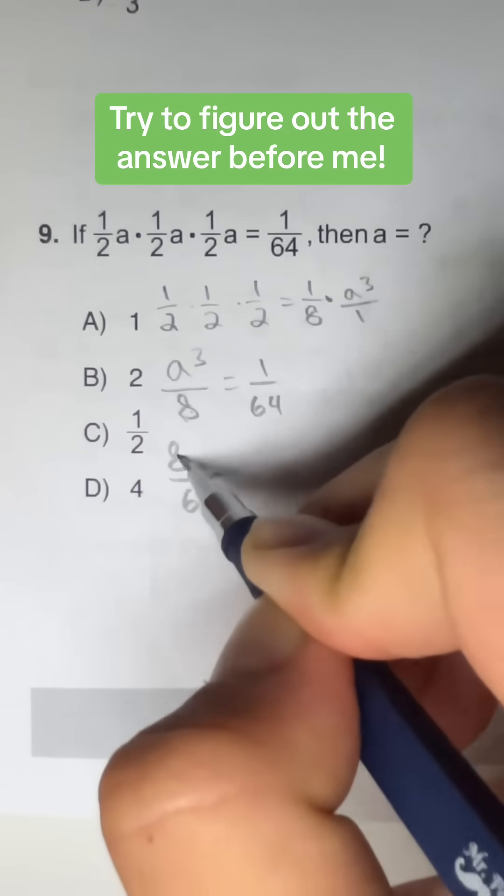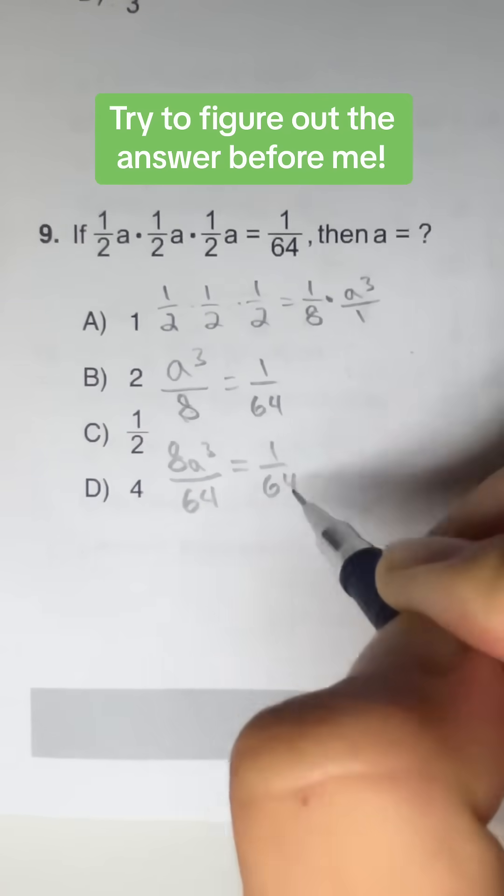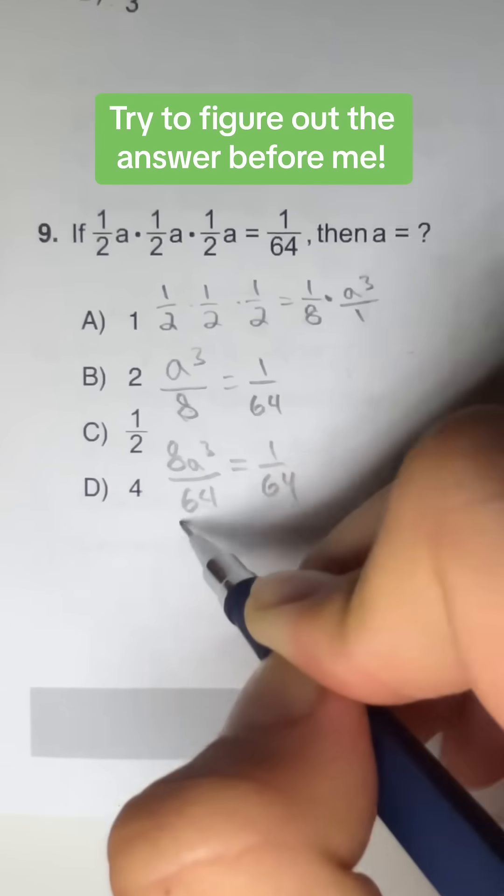So on the top, we have 8 times A to the third is equal to 1 over 64. Now the bottom is the same, so now we can compare the top.